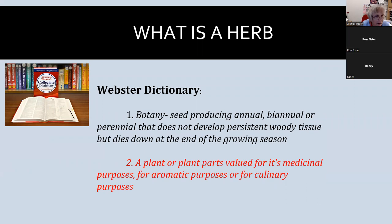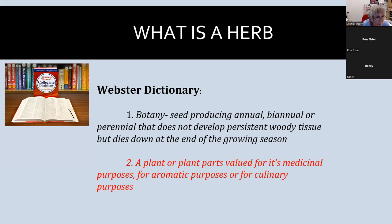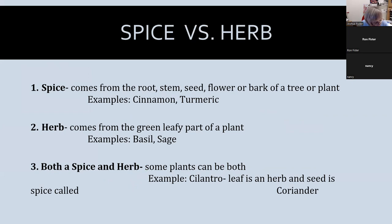The first thing we're going to do is define what a herb is for our presentation today. If you look it up in Webster's dictionary, we're going with the second definition: a plant or plant parts valued for medicinal, aromatic, or culinary purposes. Today we're going to be talking mostly about culinary, some aromatic, and I leave the medicinal purposes up to you to explore on your own. Now, a spice comes from the root, stem, seed, flower, or bark of a plant or tree — like cinnamon — whereas an herb comes from the green leafy part of the plant, like basil.